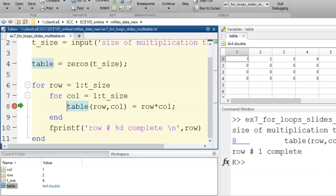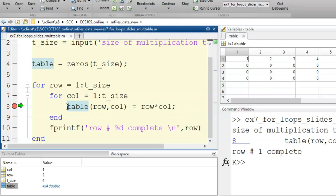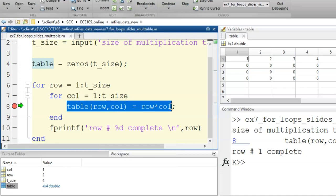Now, we are paused again, but row has been updated to 2 since it is the second time through the outer loop. Col currently equals 1 because this is our first time through the inner loop on this iteration. So, this command will now assign a value into index 2, 1.